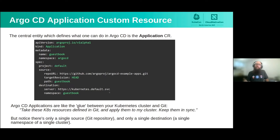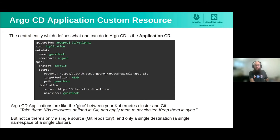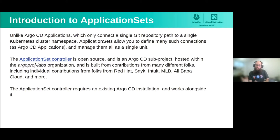But notice that in the application CR there's only one source and one destination. You can't say you want to deploy one Git repository to 10 clusters for multi-cluster deployments, or deploy 10 Git repositories to one cluster for something like a monorepo. It's just a one-to-one mapping between a single cluster and a single Git repository path. Wouldn't it be great if we could do many-to-many relationships? With Application Sets, you can do exactly that — deploy to multiple clusters, from multiple Git repositories, all from a single Application Set.